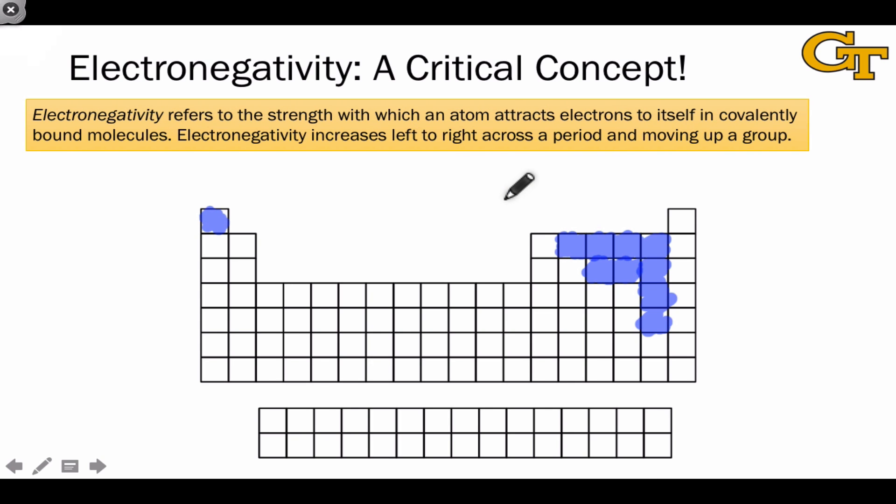Now that we've identified the elements of organic chemistry, the next natural question is, how do these elements behave? And we can think about this in terms of periodic trends. The most important periodic trend in all of organic chemistry, without question, has to do with electronegativity. Electronegativity is defined as the strength with which an atom attracts electrons to itself in covalently bound molecules.